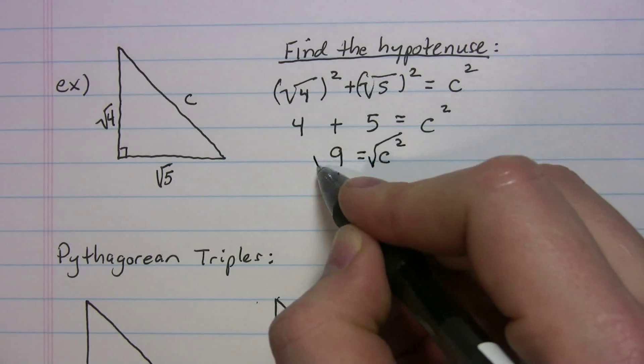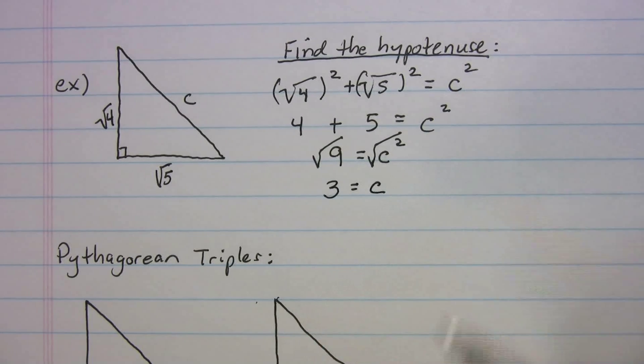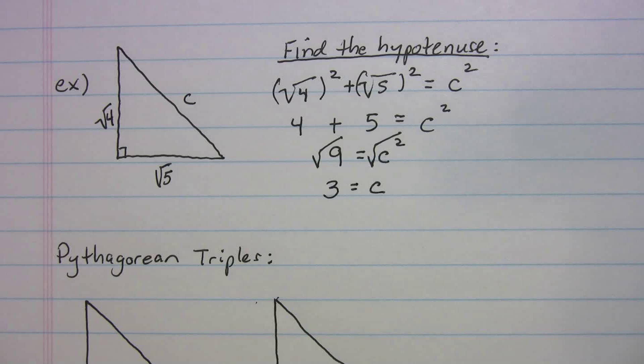How do you get rid of something squared? You take the radical. You got to do it to both sides. So you get three is equal to c. Okay, that's kind of a simple one, just making sure you know how to use Pythagorean theorem.